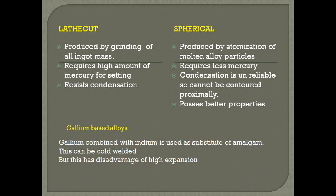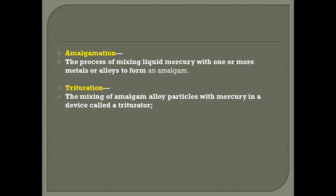Gallium-based alloys: gallium is liquid at room temperature, so the combination of gallium and indium results in a cold-level mass. This can be used as an alternative to mercury dental amalgam to prevent the after effects of mercury. But the main disadvantage of gallium-based alloys is it tends to expand more, thereby creating pressure on the tooth, causing pain and sometimes fracture.